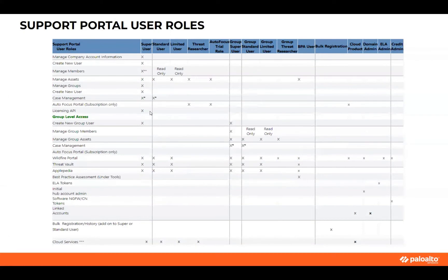So you have to be at least a standard user to open and manage support cases for your organization. The super user can use the licensing API to activate licenses and create new user groups. A few other things include the WildFire portal and Threat Vault. The main focus is managing assets, creating groups, and opening cases — you need to be at least a standard user to open those cases.